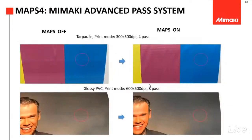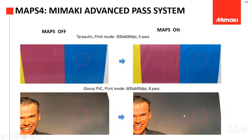Ini bisa lihat gambar kalau misalkan menggunakan Maps dan tidak. Ketika tidak menggunakan Maps, dia kelihatan ada stepping-nya dari sub-scan awal dan sub-scan selanjutnya. Sedangkan ketika sudah diaktifkan fitur Maps-nya, dia bisa menjadi lebih halus.